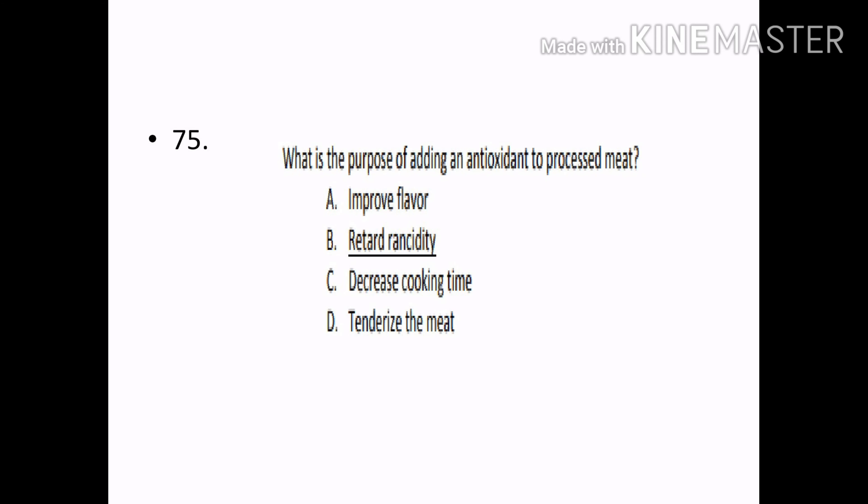What is the purpose of adding an antioxidant to processed meat? Options — Improve flavor, Retard rancidity, Decrease cooking time, Tenderize the meat. Correct answer: Option B — Retard rancidity.